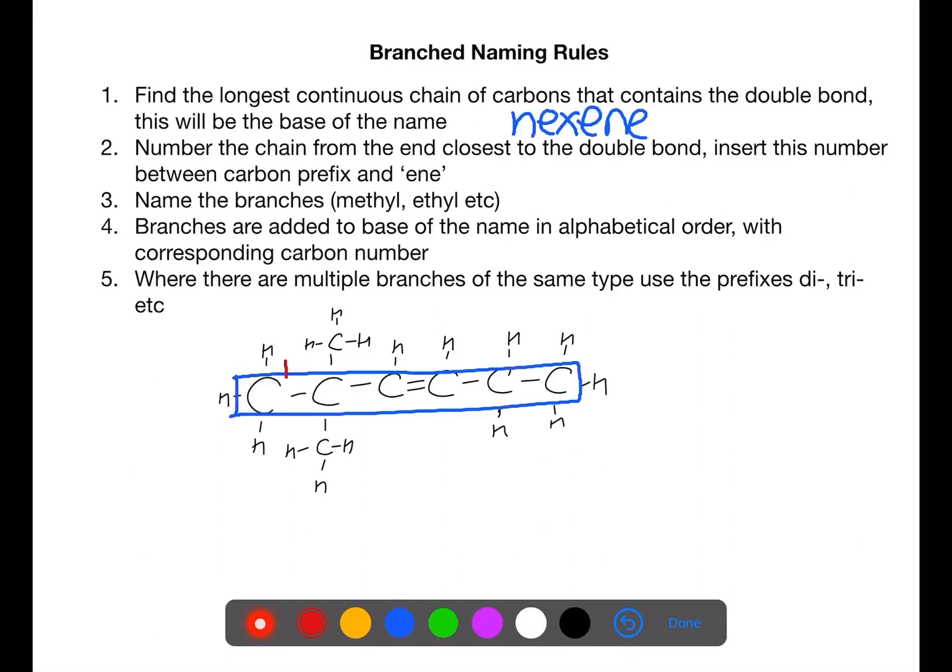We then number the chain from the end closest to the double bond. In this case this is also closest to the branches. You then insert the number of where the double bond starts in between the hex and the ene to give you hex-3-ene.